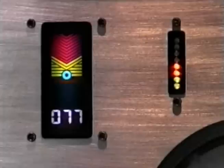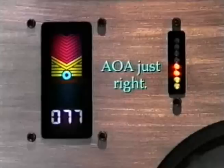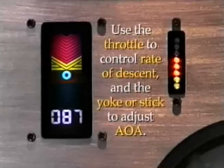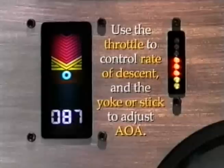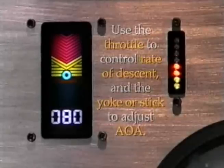This is the picture we want to see: the light bars lit abeam the green donut. That's the perfect angle of attack for all approaches. During the approach, use the power to control your rate of descent and control the angle of attack with the stick or yoke, keeping the bars lit abeam the donut as shown.